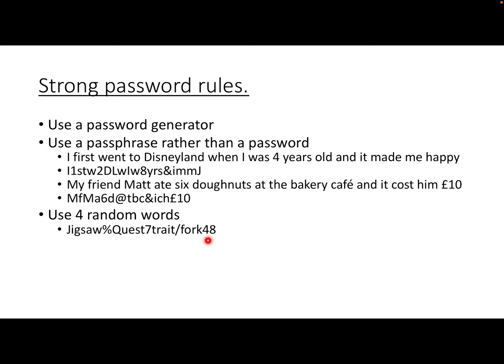You can do extra things like separating the words with slashes or symbols, or changing some of the I's to ones and S's to fives. For example: 'jigsaw quest trait fork' with some symbols in the middle — they can be quite difficult to remember but they're a lot easier than the random strings we saw at the beginning, and they're incredibly hard for a machine to crack. Here's another one: 'glimpse stuff prize koala' — we've changed the S to a dollar sign and the L to a one, and added an exclamation point. You can also use emoticons like a smiley face or unusual face somewhere in there.